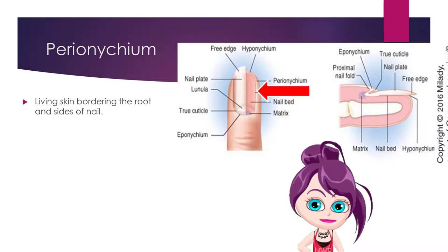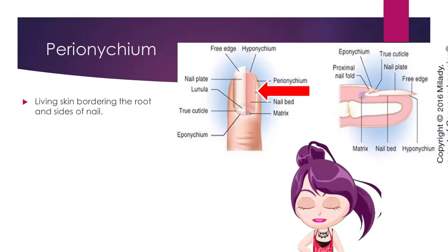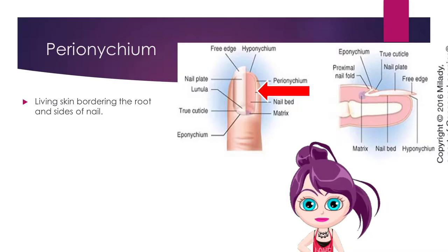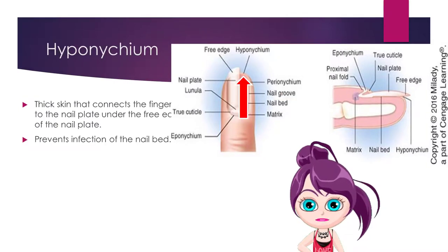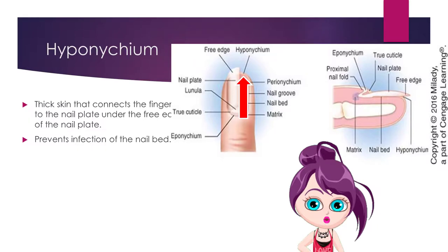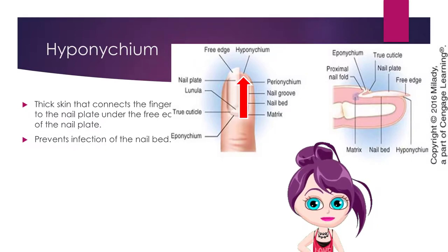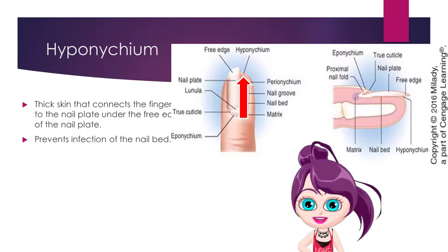The paronychium is the living skin bordering the root and sides of the nail — these are your sidewalls. The hyponychium is the thick skin that connects the finger to the nail plate under the free edge of the nail plate, and it prevents infection of the nail bed.